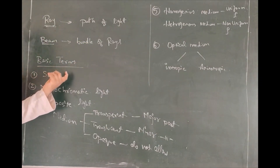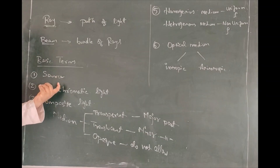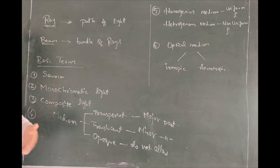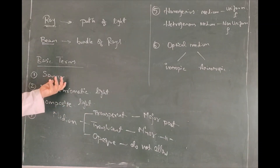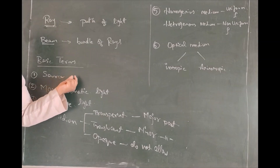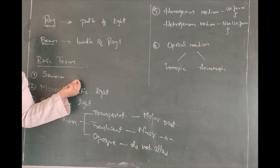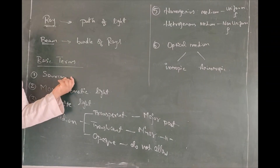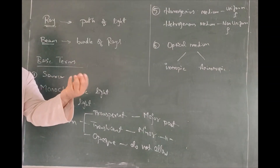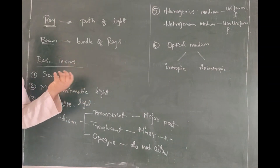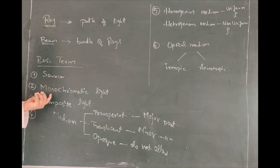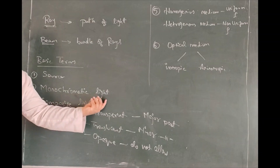Coming to the basic terms you need to learn before moving forward. The first term is source. What do you mean by source? Source is any object which gives out light. It can be the sun, stars, or anything — if any object is giving out light by its own, I will call that particular object a source of light.